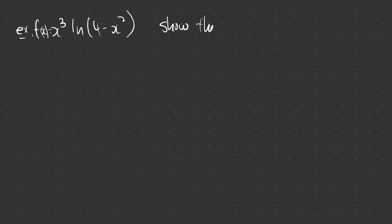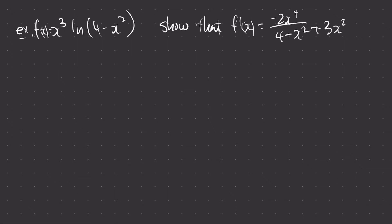The question is asking us to show that f prime of x equals negative 2x to the power 4 over (4 minus x squared) plus 3x squared times ln(4 minus x squared). They're being nice — they already gave us the answer, we just need to show how we get there.